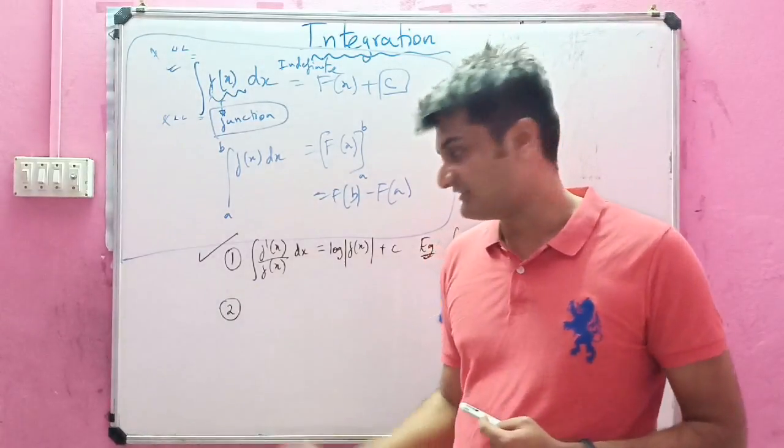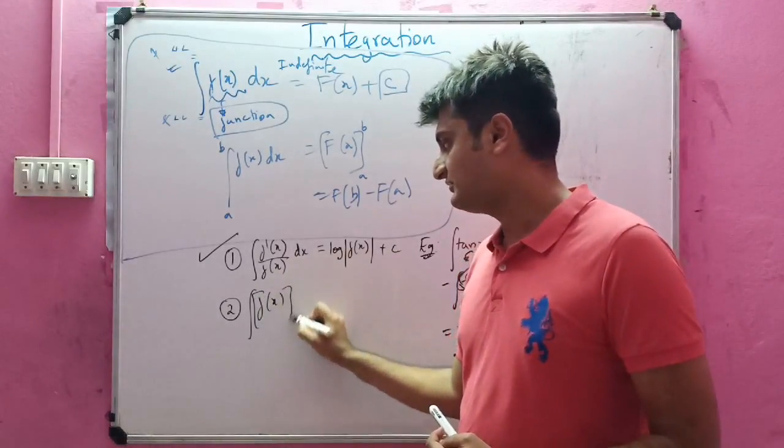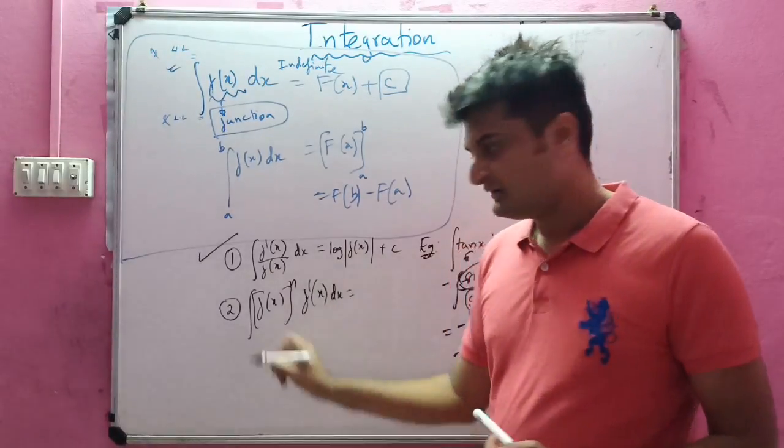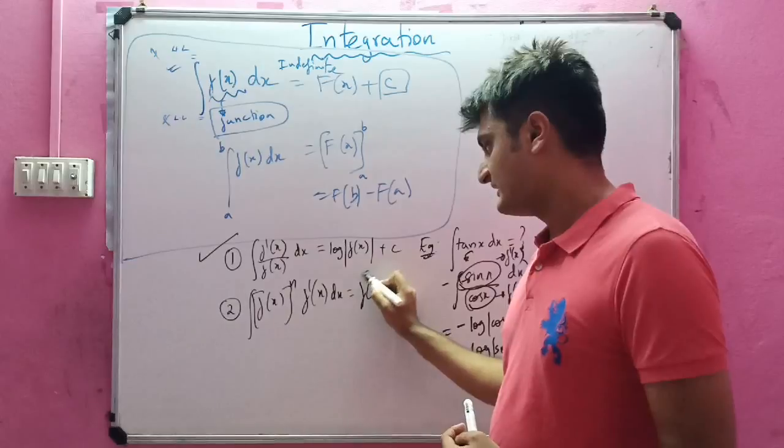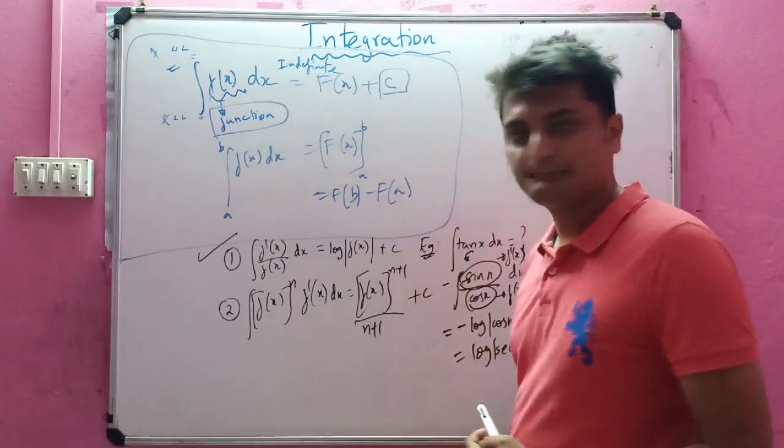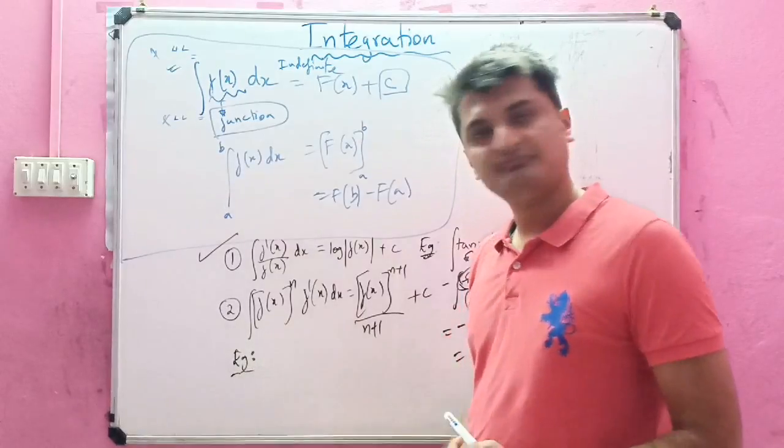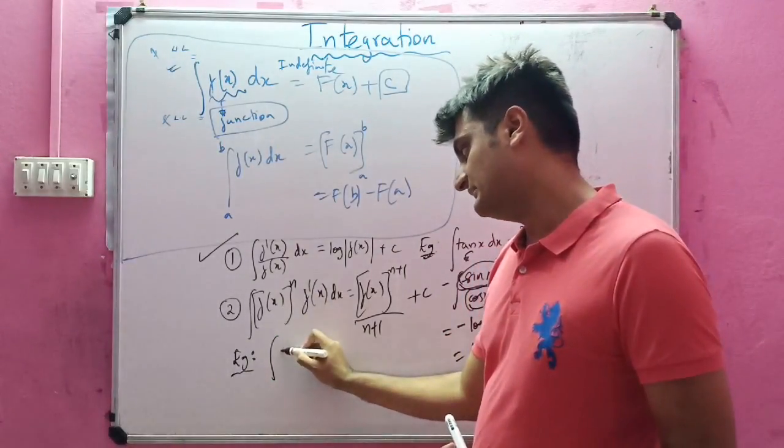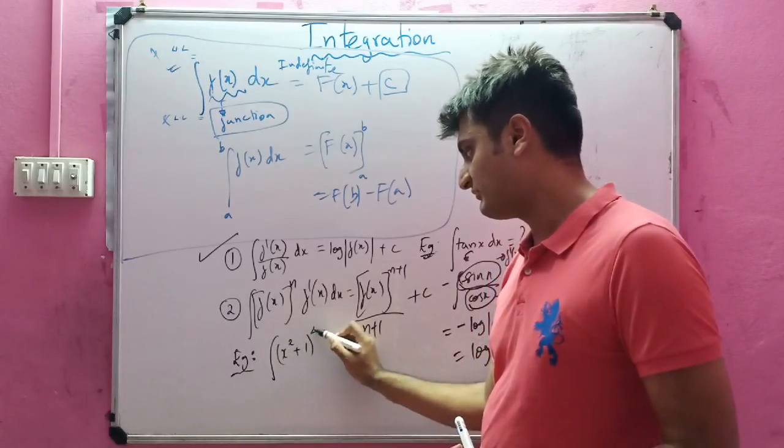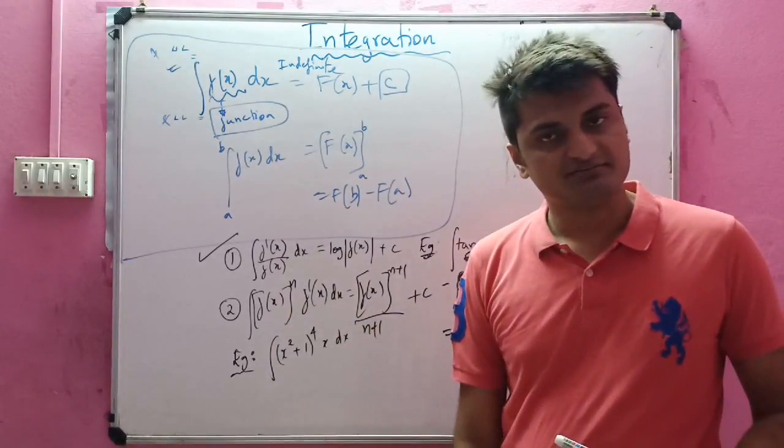The second rule we have is whenever we have an integral of a function whole power n into the derivative of that function dx, I can write this as f of x whole power n plus 1 by n plus 1 plus c. As usual, if we want to take up an example, we can write it as let me say x square plus 1 whole power 4 and I will say x dx.